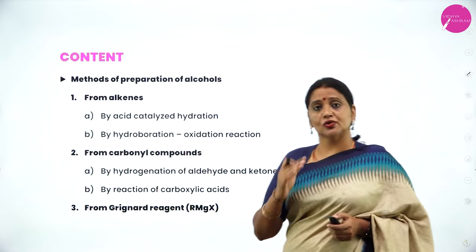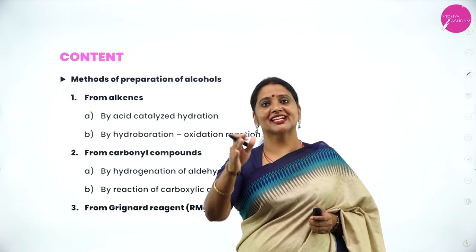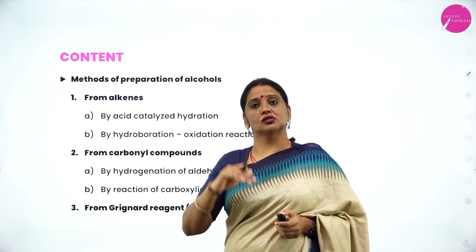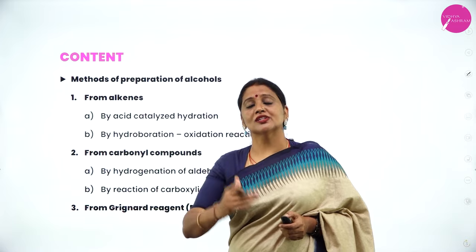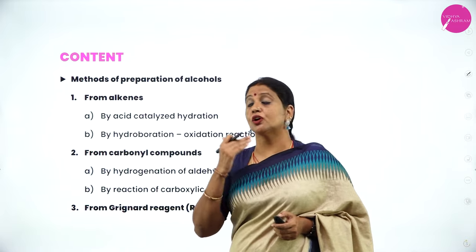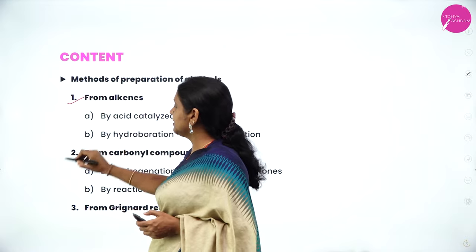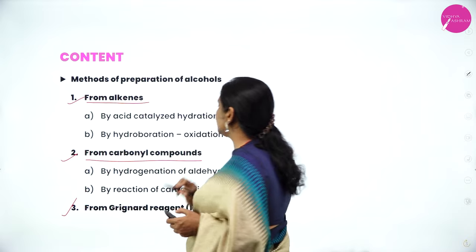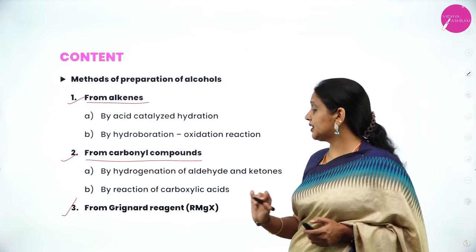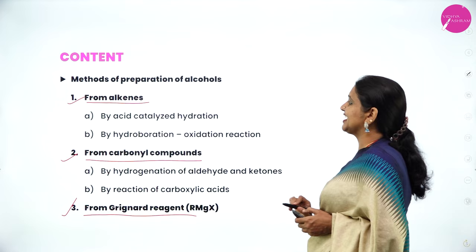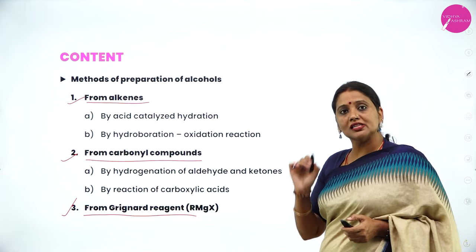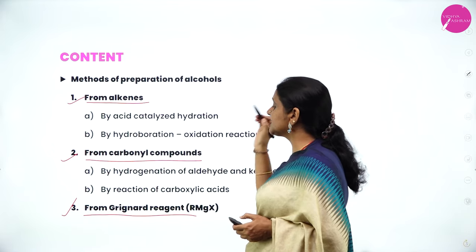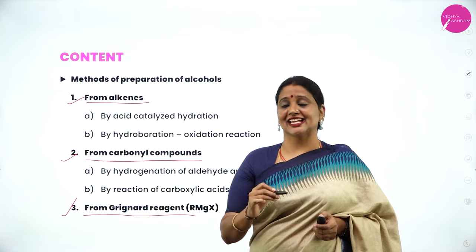Today in this session, that is in the second session, I am going to discuss about methods of preparation of alcohols — how alcohols are generally prepared and what is the starting material. Alcohols are prepared generally by three methods: first from alkenes, second from carbonyl compounds, and third from Grignard reagent.